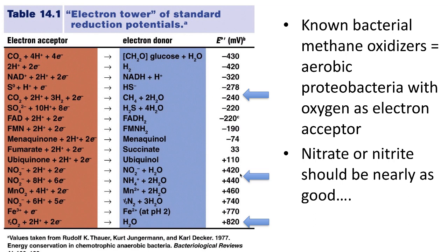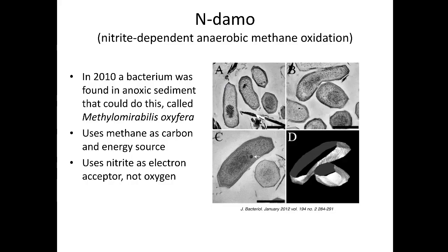Nitrate or nitrite should be nearly as good as oxygen, and we should be able to find these organisms. And surprise, surprise — if there's an electron gradient that can give you energy, microorganisms use it. These are called nitrite-dependent anaerobic methane oxidation, or n-damo. In 2010, a bacterium was found in an anoxic sediment that could do this, called Methylmirabilis oxyphera. It uses methane as a carbon and energy source and uses nitrite as an electron acceptor, not oxygen.